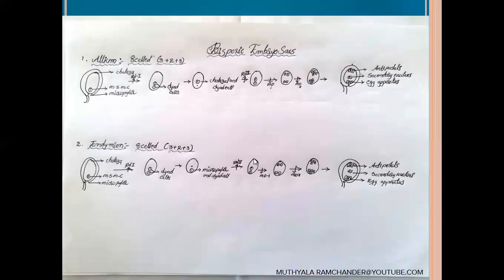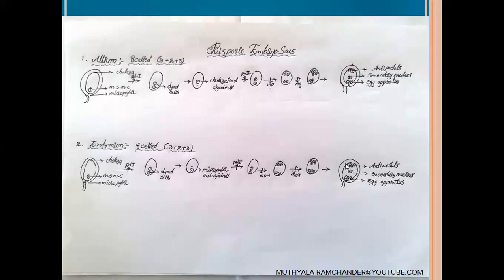From these two megaspores, one moves to the chalazal end and one remains at the micropylar end. They participate in first and second mitotic divisions to form eight cells. Four haploid cells from the micropylar region and four from the chalazal region are formed. From each corner, one cell moves to the center as secondary nucleus. Three cells at the micropylar region act as egg apparatus, with the middle cell as egg cell and lateral two as synergids. Three cells at the chalazal region are the antipodals. At the mature stage, endemion contains eight cells arranged in a three plus two plus three arrangement, similar to the polygonum type.